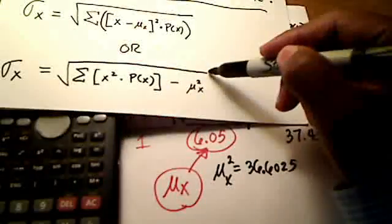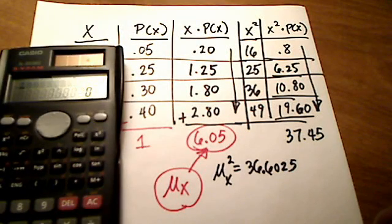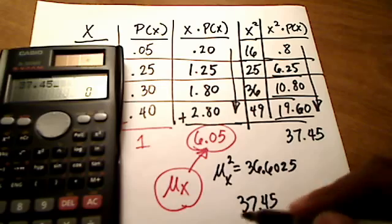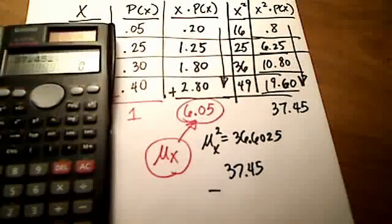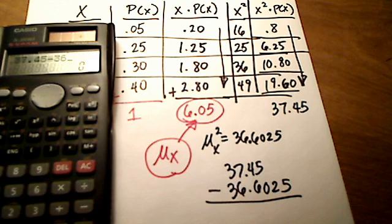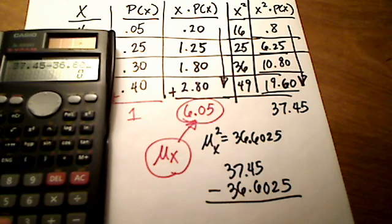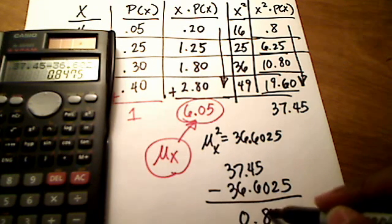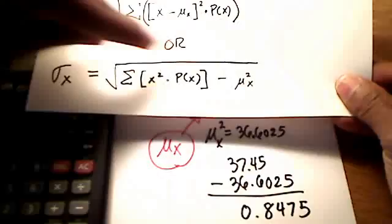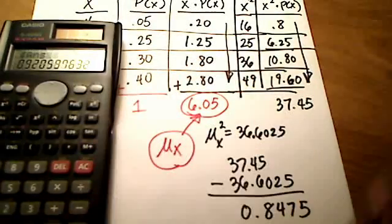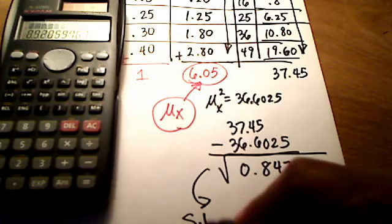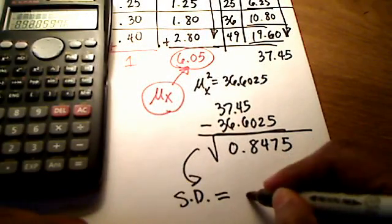So I've got 37.45, and I'm subtracting 36.6025 on my calculator, which gives me 0.8475. That's still not my answer — I have to do one more thing: take the square root of 0.8475. The square root gives me a final answer for the standard deviation of 0.92. My calculator shows 0.92059...